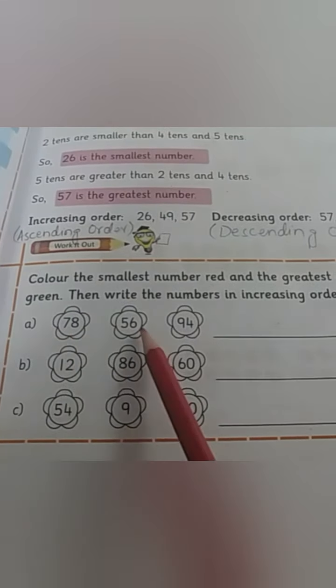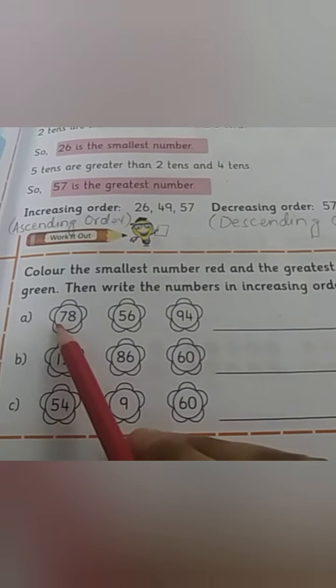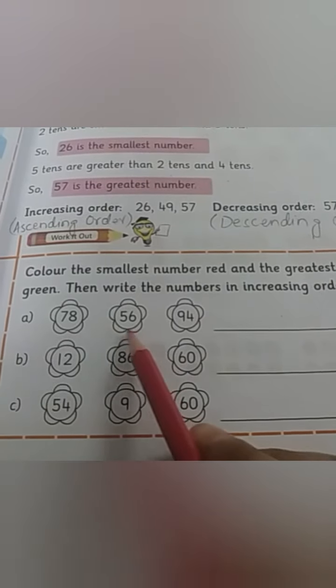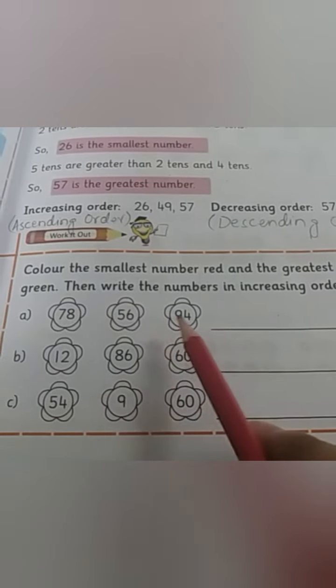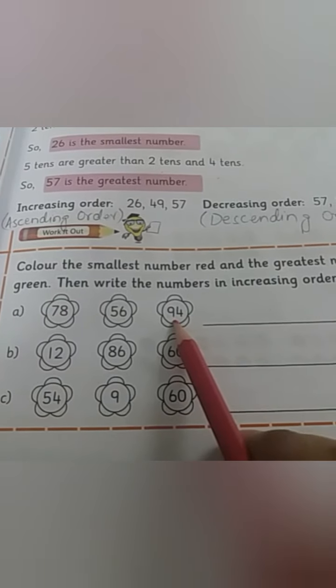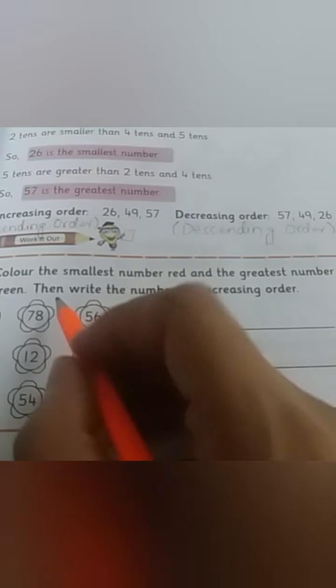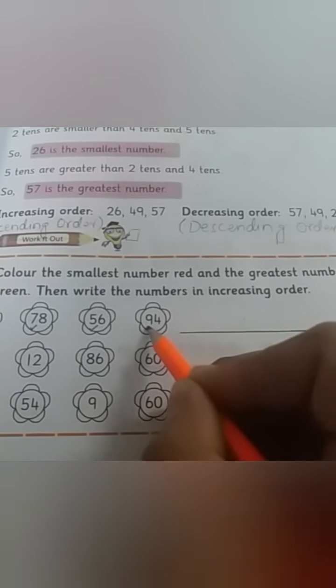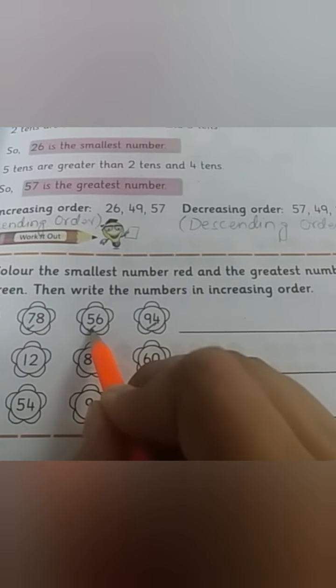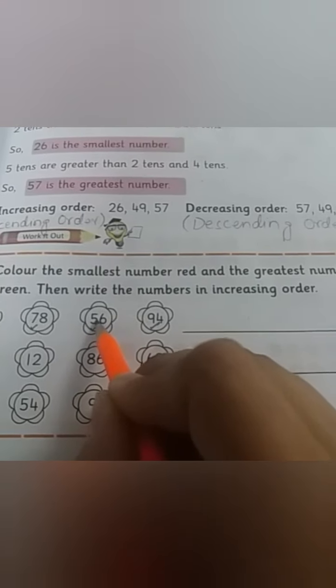78, 56, 94. In 78, we have 7 tens. In 56, we have 5 tens. In 94, we have 9 tens. Now let's see which one is the smallest: 7 is smallest, 5 is smallest, or 9 is smallest? In teeno mein kaun sa chota hai? 5. 56. 5 tens in dono se chota hai.